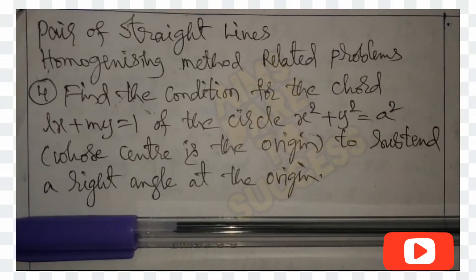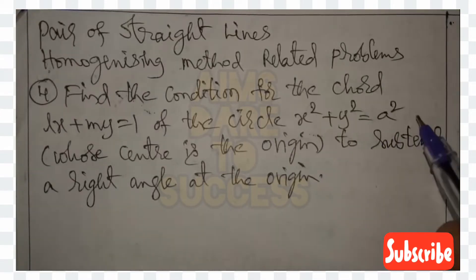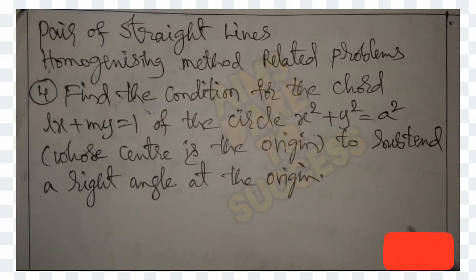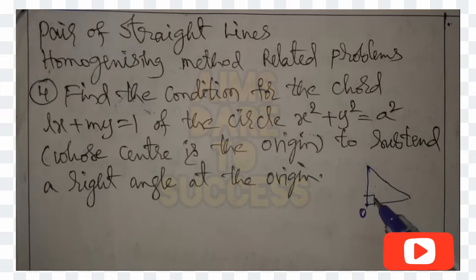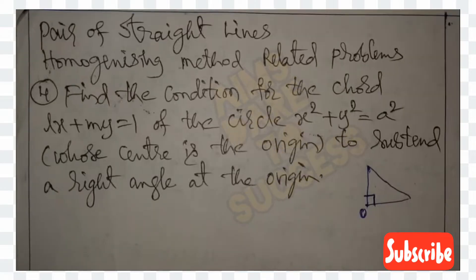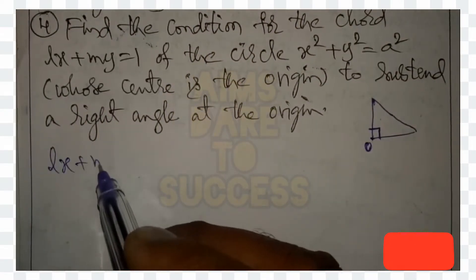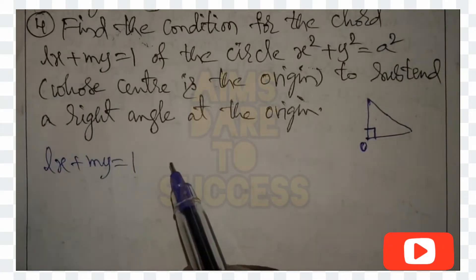Hello, namaste, my dear students. Welcome back to Aim's Dare to Success YouTube channel. Today we are discussing pair of straight lines - homogenizing method, problem number four. Find the condition for the chord lx + my = 1 of the circle x² + y² = a², whose center is the origin, to subtend a right angle at the origin. Right angle means mutually perpendicular.